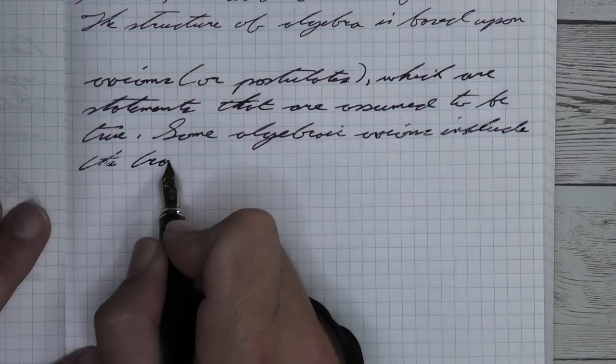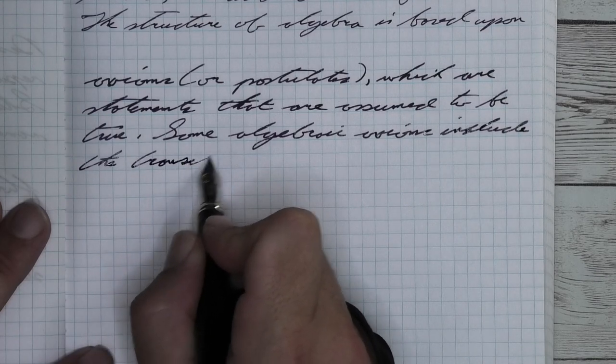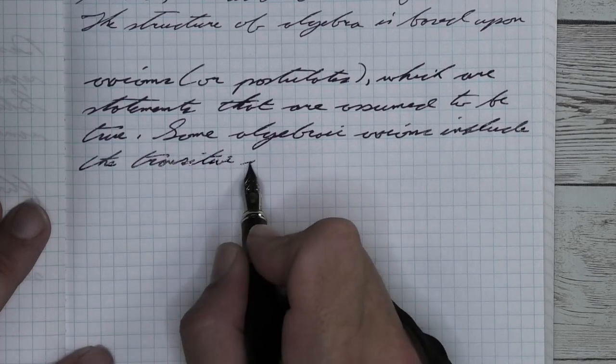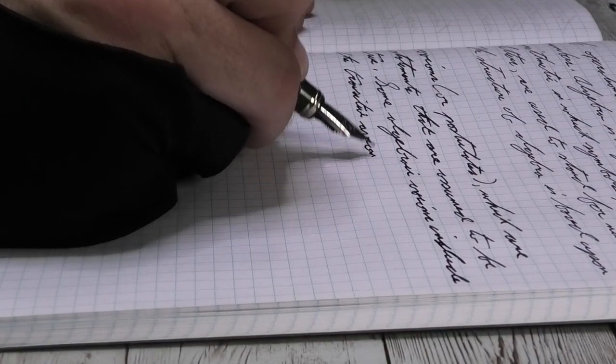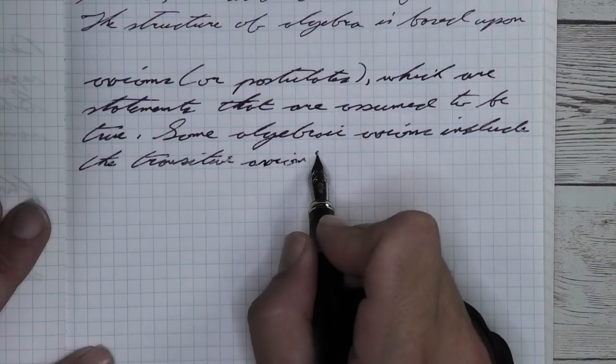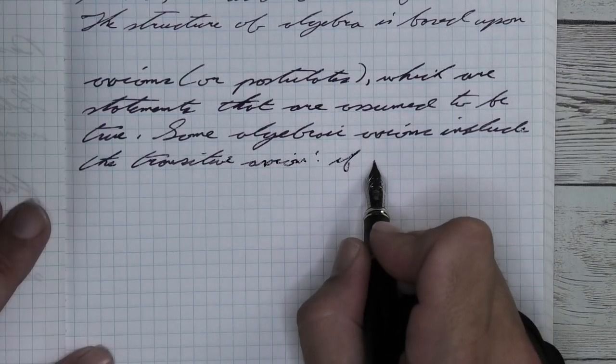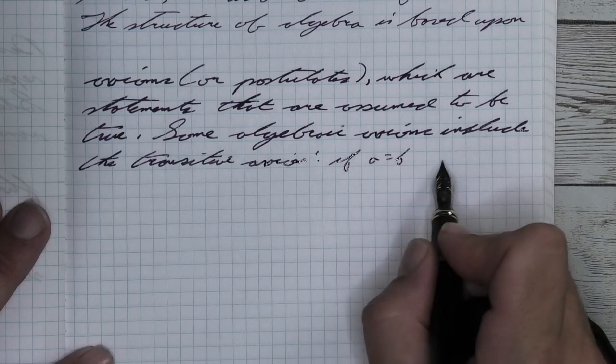Looking at the medium nib, it is quite a bit darker than we had with the fine. Very dark purple with no feather, no spread. Unfortunately, the wetter medium and thicker lines have eaten up the shading that's there. So, no shading.